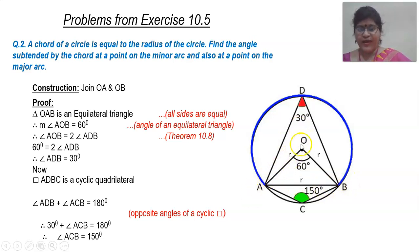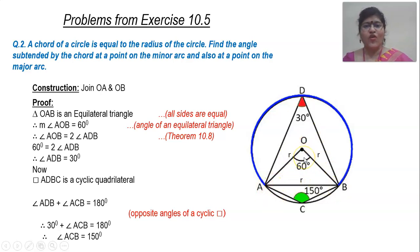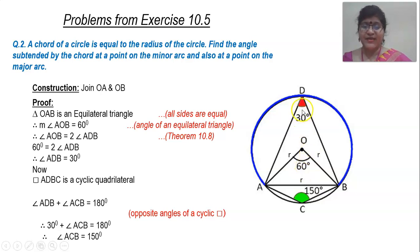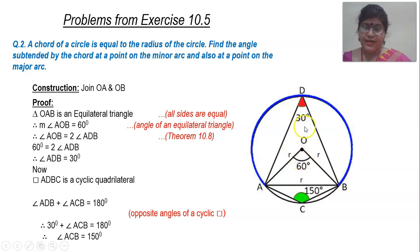Construction: join OA and OB. You get an equilateral triangle, and each angle of the equilateral triangle is 60°. So the measure of angle AOB is 60°. Now, you need to find the measure of the angle in the major arc, which is angle ADB. You have learned that the measure of the angle at the center is double the measure of the angle subtended by the same arc at any other point on the circle. So the central angle AOB of 60° is double angle ADB, making the measure of angle ADB equal to 30°.